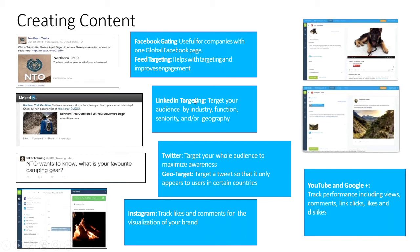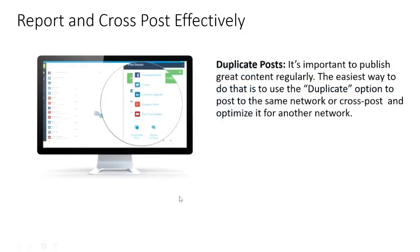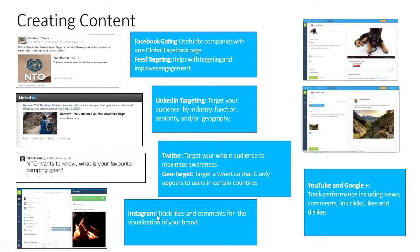For LinkedIn Targeting, you can target your audience based on company size, geography, and industry. This is useful if you're targeting a particular business area. For Twitter, content can be available to the whole audience to maximize awareness, or you can target tweets to specific countries via geo-targeting. Instagram helps you track likes and comments for brand visualization. YouTube and Google Plus help you track performance including views, comments, link clicks, likes, and dislikes.